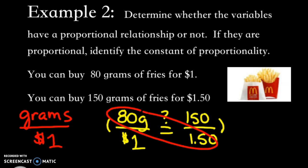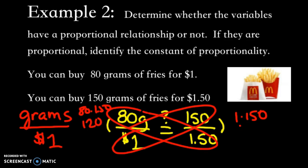80 grams times $1.50, that gives us $120. And when we do this side, 1 times 150 equals $150. So these are not proportional. So they will not have a constant of proportionality.